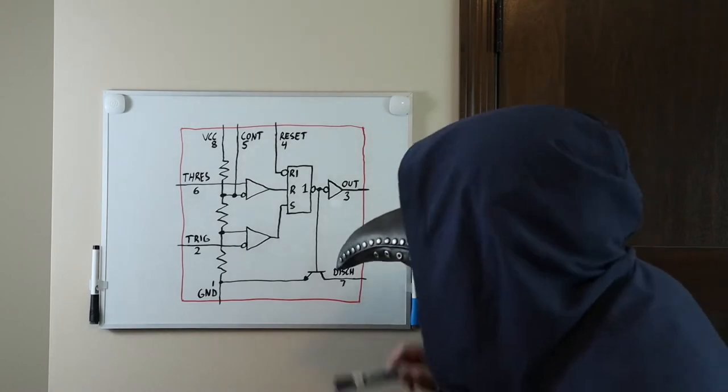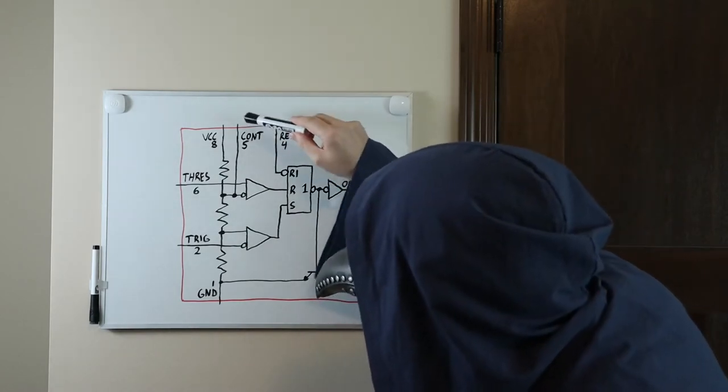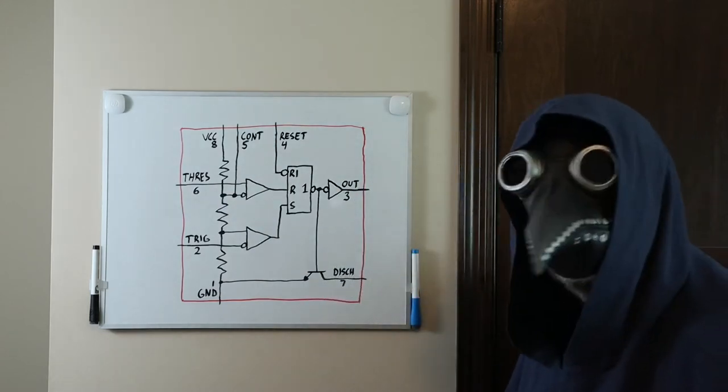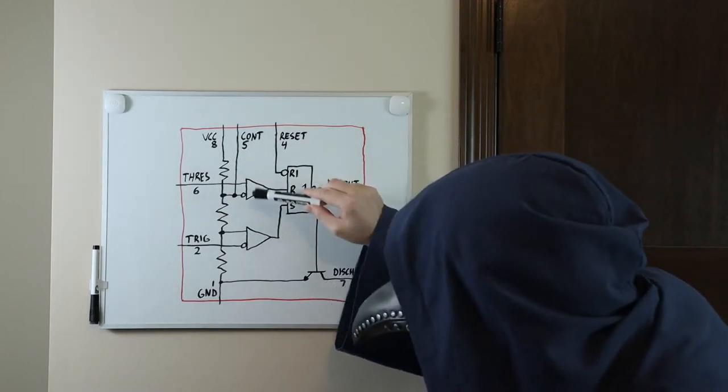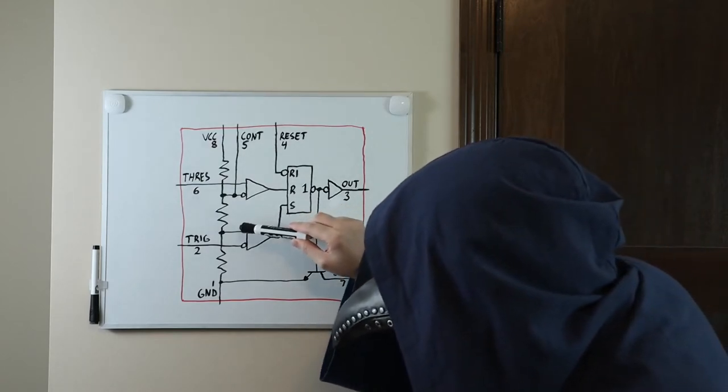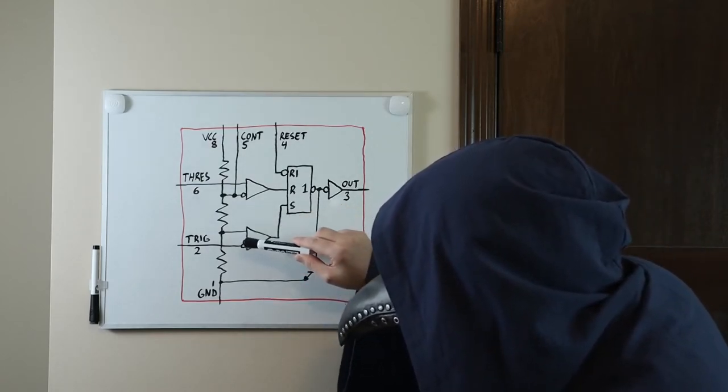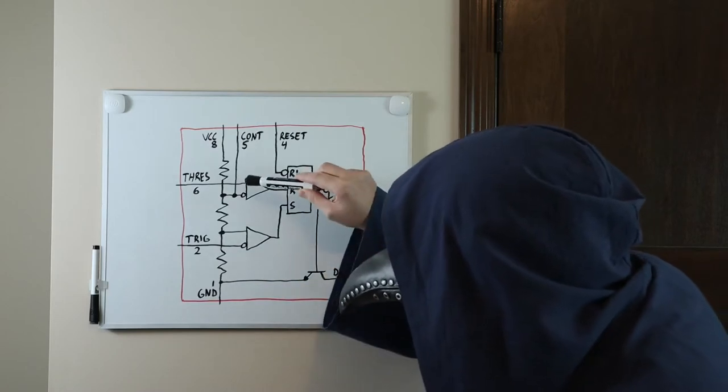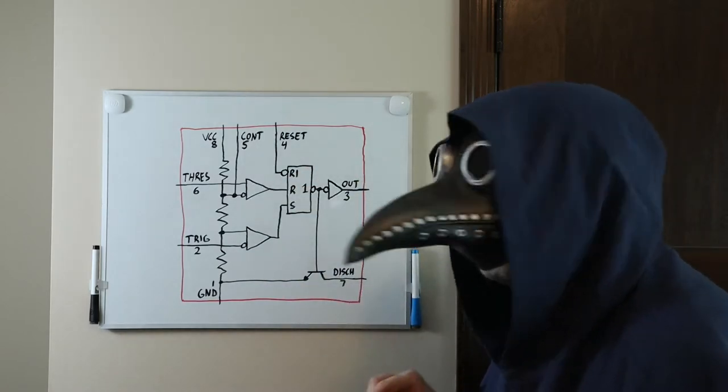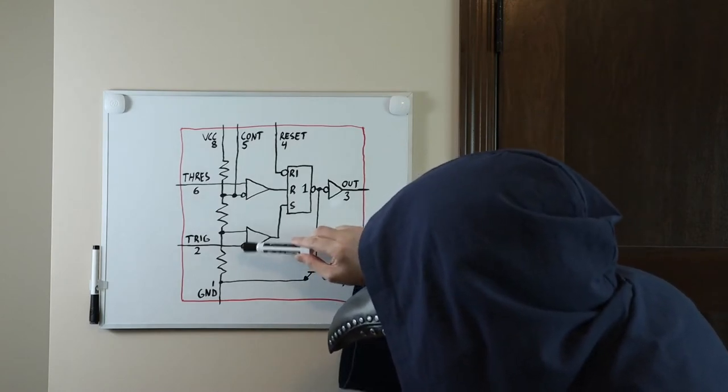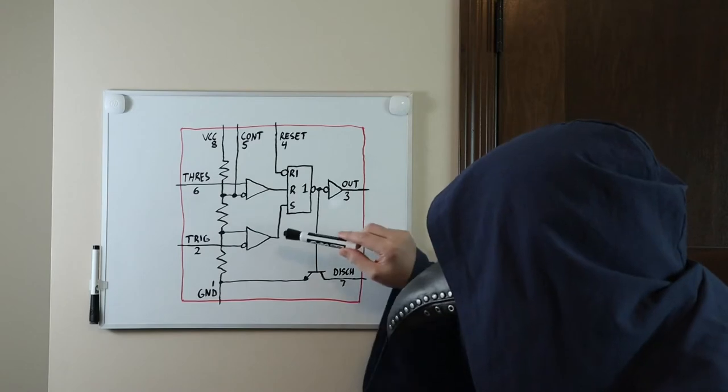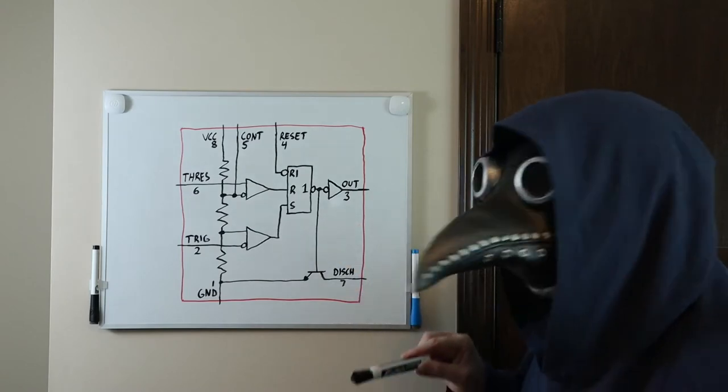Notice that we have a control pin here, which allows us to override these two voltages, if we choose to do so. We have two comparators here, which will output a high signal only when the non-inverting input here is more positive than the inverting input here. Basically, it will subtract the inverting input from the non-inverting input, and if the result is positive, it will output a high signal, and if the result is negative, it will output a low signal.